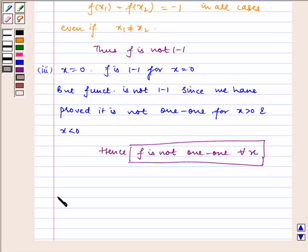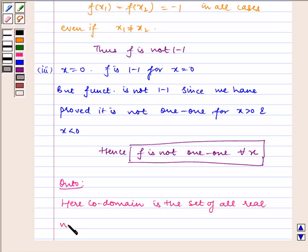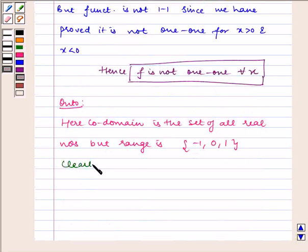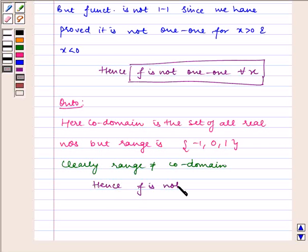Now let us check for onto. Here, the codomain is the set of all real numbers, but the range is {-1, 0, 1}. So clearly, range is not equal to codomain. Hence, f is not onto.